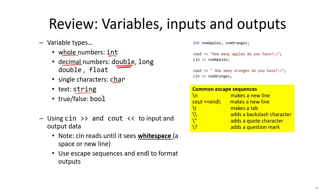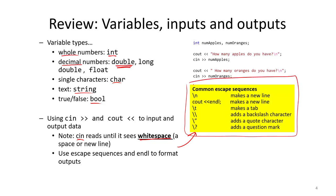We also talked about how char and string store characters and strings, and bool stores true or false. We learned how to use cin and cout to input and output data. Cin reads from the keyboard into a variable, stopping at whitespace such as a space or newline. We also learned escape sequences to format inputs and outputs — for example, \n for a new line and \t for a tab.